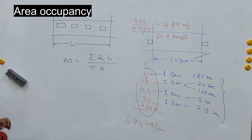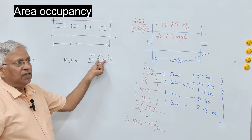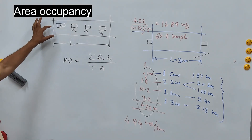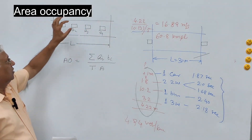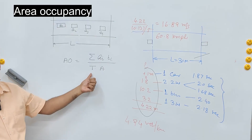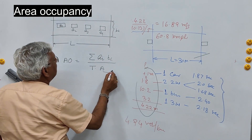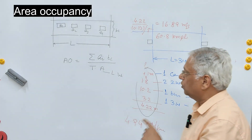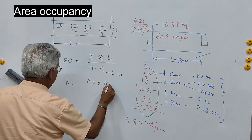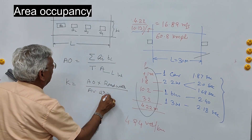Area occupancy = summation of (a_i × t_i) / (T × A), where A = L × w is the area of the trap. In time occupancy we only took summation of t_i / T; now area is also brought into the picture — a_i is the area of each vehicle, and t_i is the time that vehicle spends in the trap. Once you know area occupancy, density = area occupancy × road width w / average area of the vehicle.